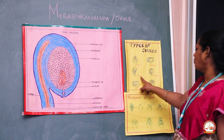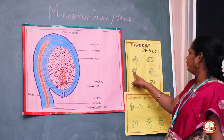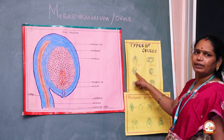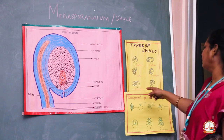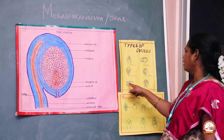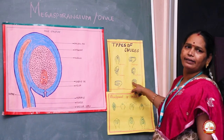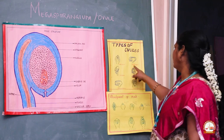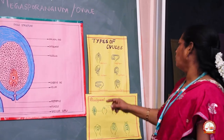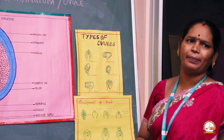The second type is anatropous. 80% of angiosperms possess this anatropous ovule, where we have an inverted ovule. Here, the micropyle and the funicle are at right angles to each other. In anatropous, it is a vertical straight line — the micropyle and chalaza are in a vertical line. The campylotropous is also called a bean-shaped ovule, whereas anatropous is a horseshoe-shaped ovule.